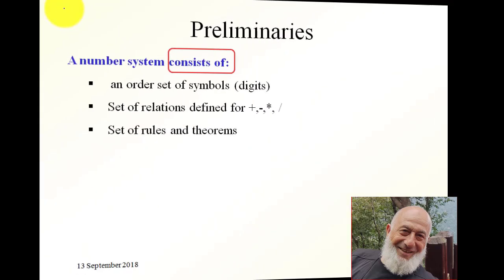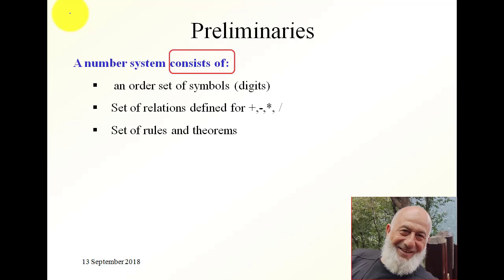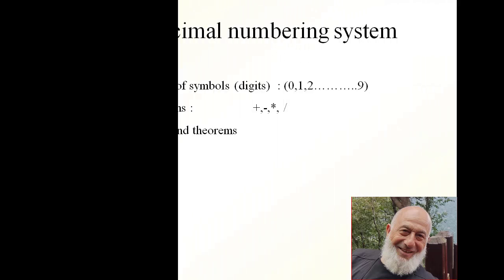What is a numbering system? What does it consist of? A numbering system consists of an ordered set of symbols or digits. It also consists of a set of relations defined over these digits, and a set of rules and theorems that govern these relations over the symbols or digits.